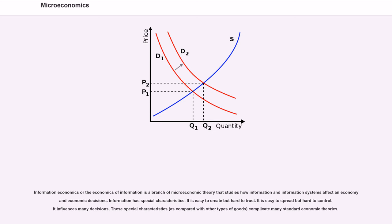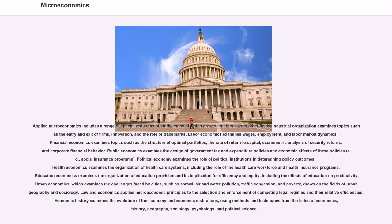Information economics or the economics of information is a branch of microeconomic theory that studies how information and information systems affect an economy and economic decisions. Information has special characteristics. It is easy to create but hard to trust. It is easy to spread but hard to control. It influences many decisions. These special characteristics, as compared with other types of goods, complicate many standard economic theories.